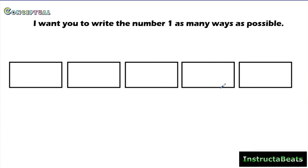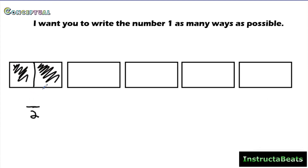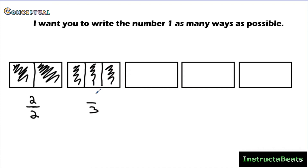Some of you might have started writing fractions equivalent to 1, and that's where we're going. Here I have a bunch of different area models. For this first one, I'm going to split it into two pieces, so my denominator is 2. If this is a brownie and I want to eat the whole brownie, I'd have to eat 2 out of 2. So 2 over 2 is equivalent to one whole. If I split into thirds, the denominator is 3, and I'd have to eat 3 pieces — so 3 thirds is also equivalent to one whole.